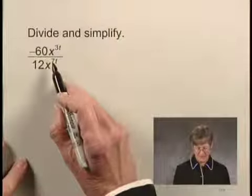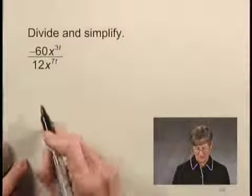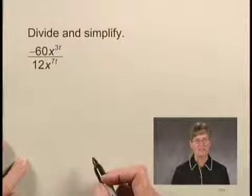In this exercise, we're going to do a division and simplify the result. We have negative 60x to the 3t power divided by 12x to the 7t power.